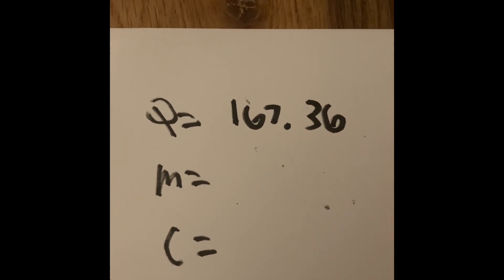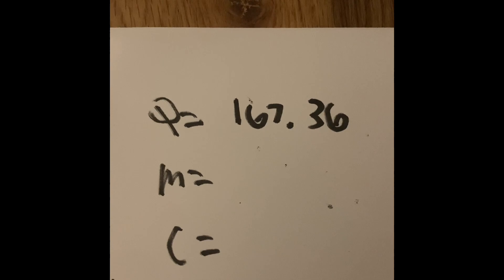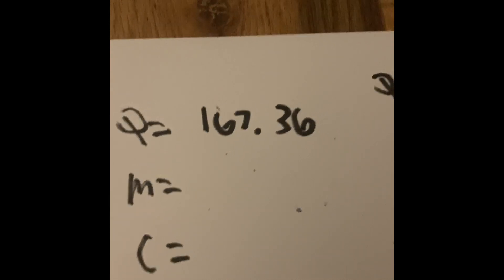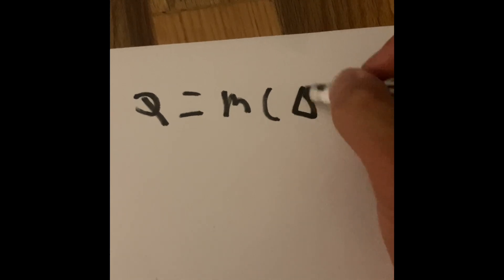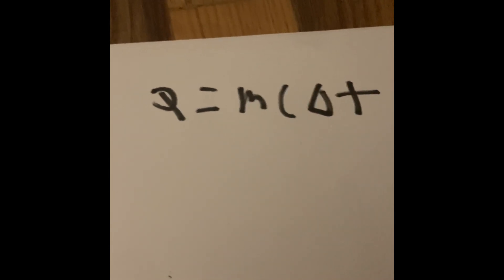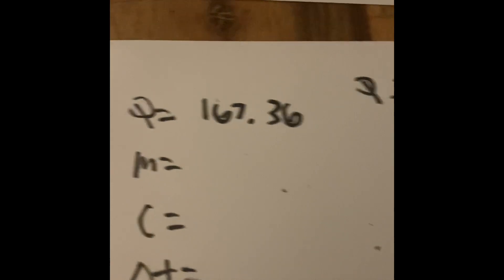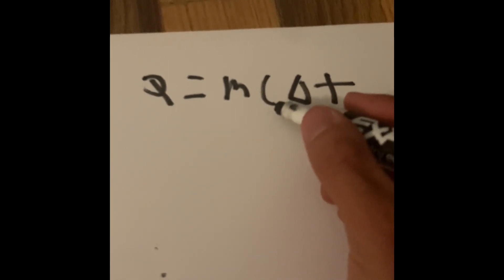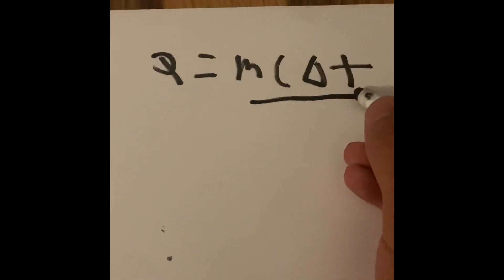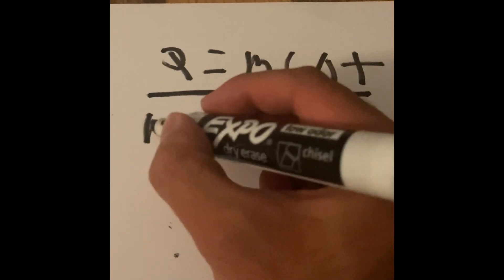But uh-oh. When we do the formula, when it's Q equals mass times C times change in temperature, we don't want to find Q anymore. We already know Q. So to make C alone and find the specific heat of the silver, divide everything by M delta T.